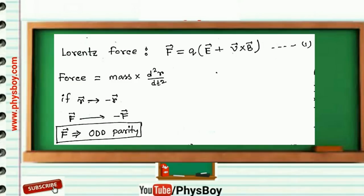So under parity transformation, F⃗ is odd parity. Now from equation (1), qE⃗ and q(v⃗×B⃗) both have odd parity, so under parity transformation E⃗ is odd parity.